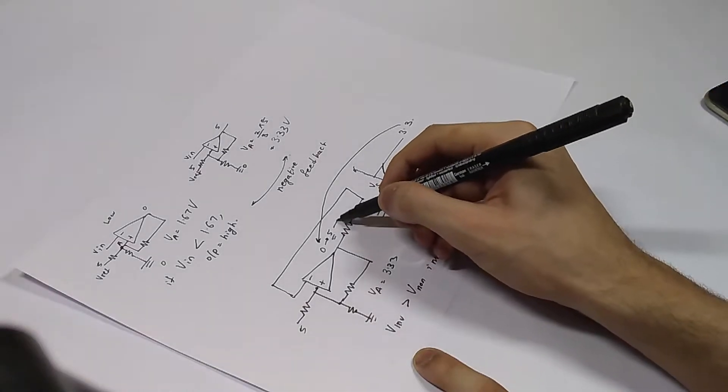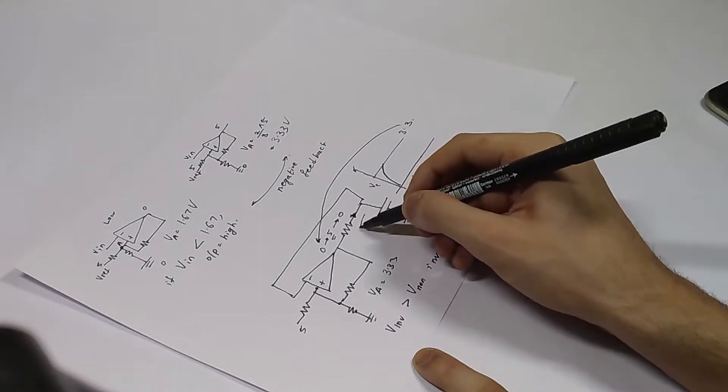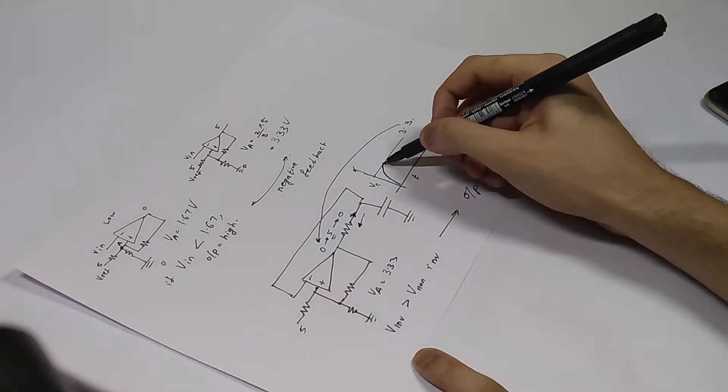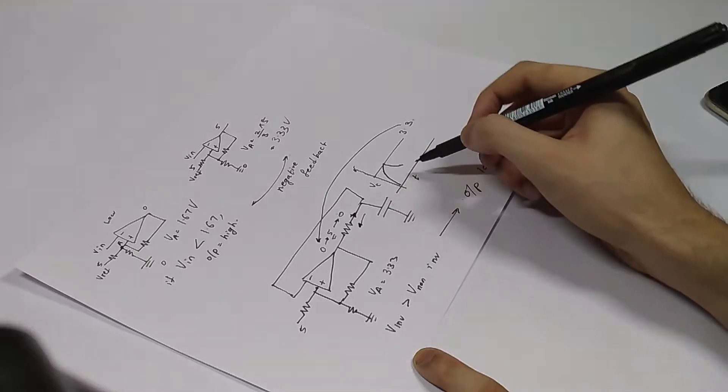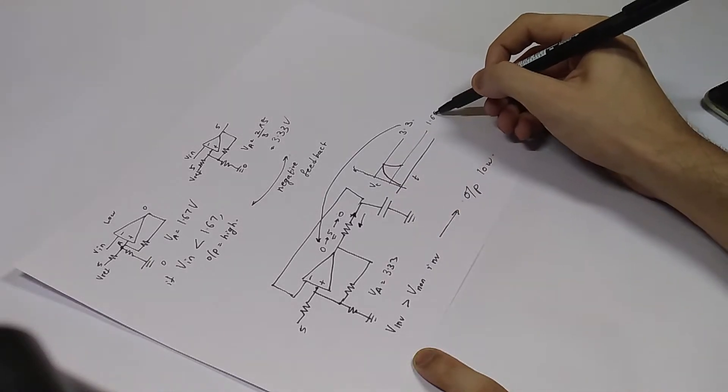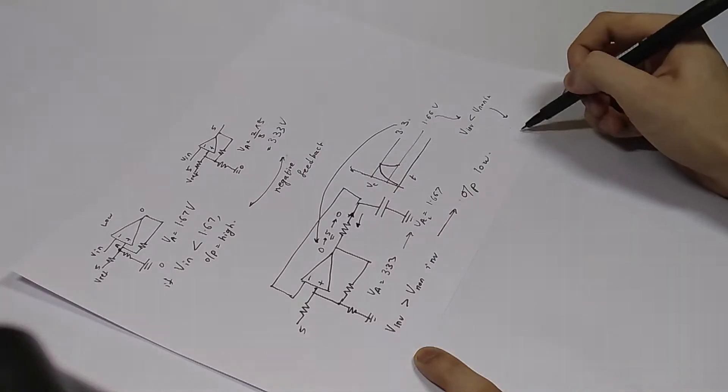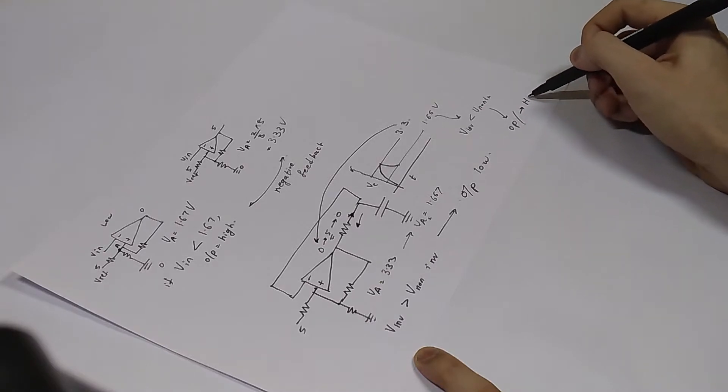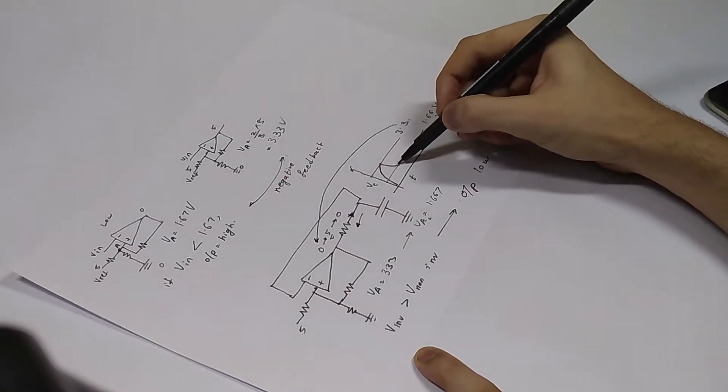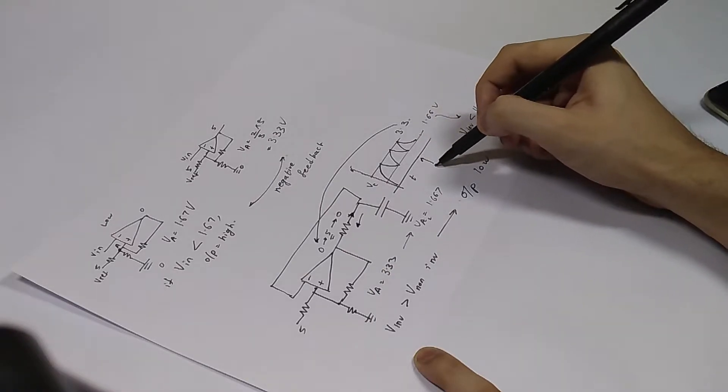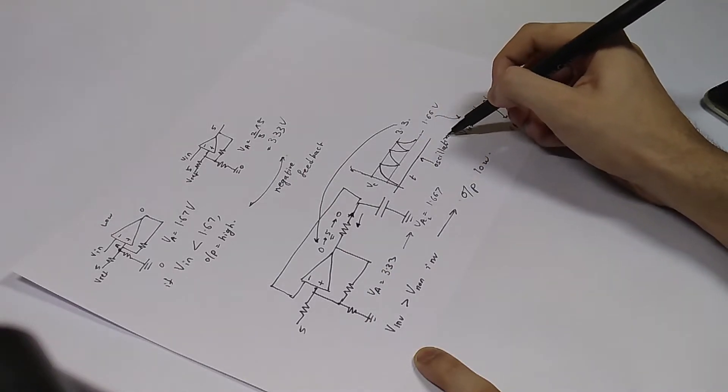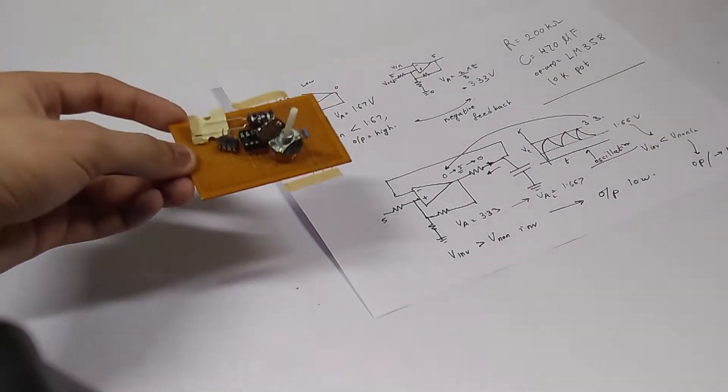This means the output of the op-amp will be pulled low. Once the voltage pulls low, the capacitor will start discharging through the same resistor and the voltage will start dropping. Once the voltage drops below a trigger voltage of 1.67 volts, the voltage on the non-inverting input will be higher than the inverting, and this means the capacitor will start charging again. This cycle repeats continuously and this is what makes it an oscillator.